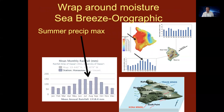The sea breeze orographic effect is visible as a bullseye of precipitation a little bit away from the coastline on the Kona coast of the Big Island. If you plot precipitation by month, there's a summer maximum. The trade winds are pushed around South Point and through the gap between Mauna Kea and Mauna Loa, and the moisture wraps around the island. The slopes of Hualalai and Mauna Loa heat up, creating a sea breeze effect that blows up the slope of the volcano, producing orographic lifting and summer rainfall.